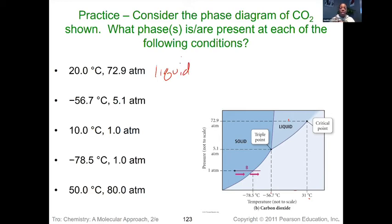If we're dealing with negative 56.7 and 5.1 atmospheres, well negative 56.7 is here, 5.1 puts right on the triple point, so we would say the triple point.